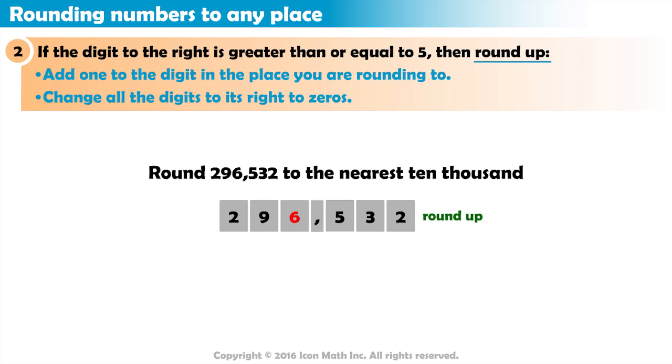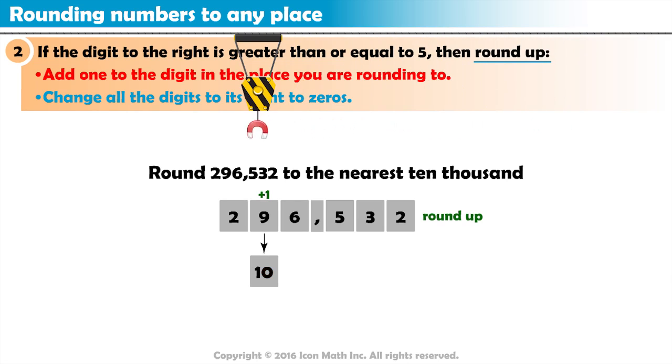So, we round up. We add 1 to the digit in the 10,000s place. But, we have a 9 in the 10,000s place. So, we put a 0 in the 10,000s place, and carry the 1 to the digit on its left.